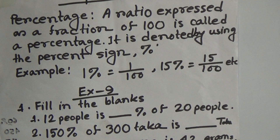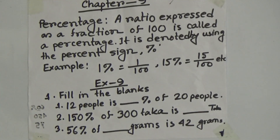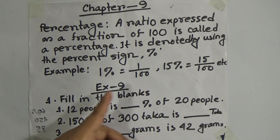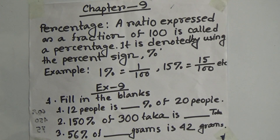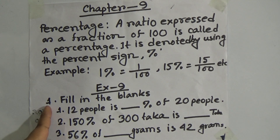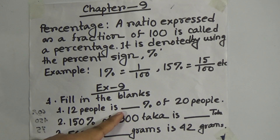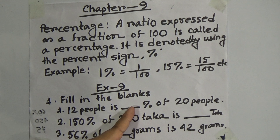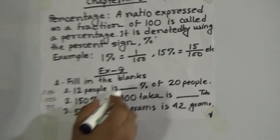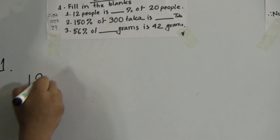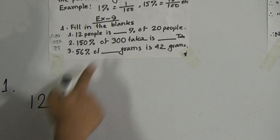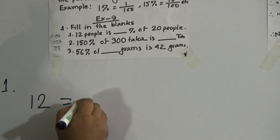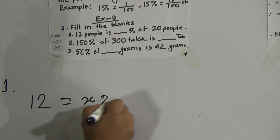I hope you have understood what is percentage. Now we shall go to our exercise. From exercise 9, we shall solve question number 1, 2, and 3. So question number 1 — fill in the blanks. Here you notice: 12 people is __ percent of 20. We do not know the value of the blank, so we need to find it out. Let 12 people equal x percent of 20.